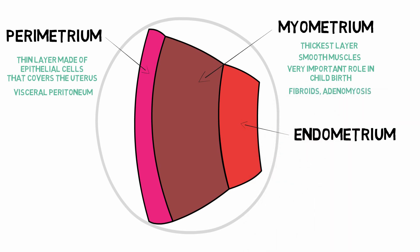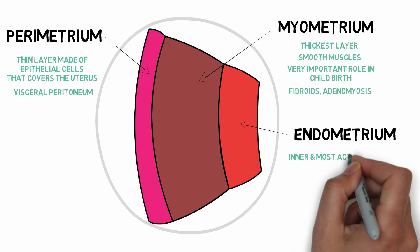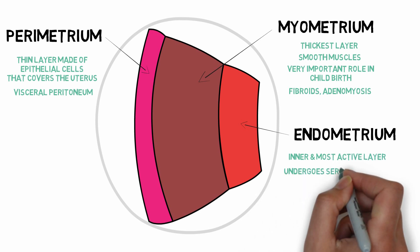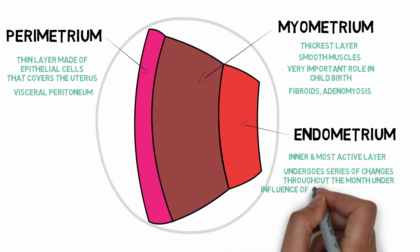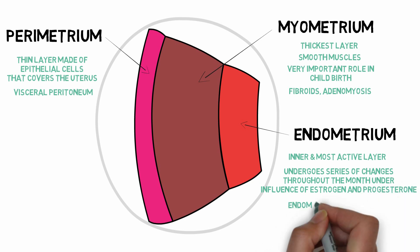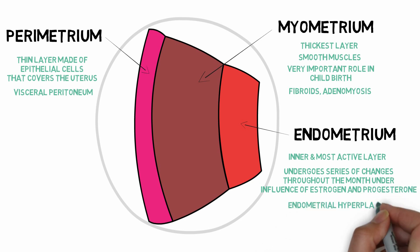The myometrium is also the main site for development of fibroids and adenomyosis. The endometrium is the innermost and most active layer of the uterus. It undergoes a series of changes throughout the month under the influence of hormones estrogen and progesterone, and is the site for development of endometrial hyperplasia and cancer.